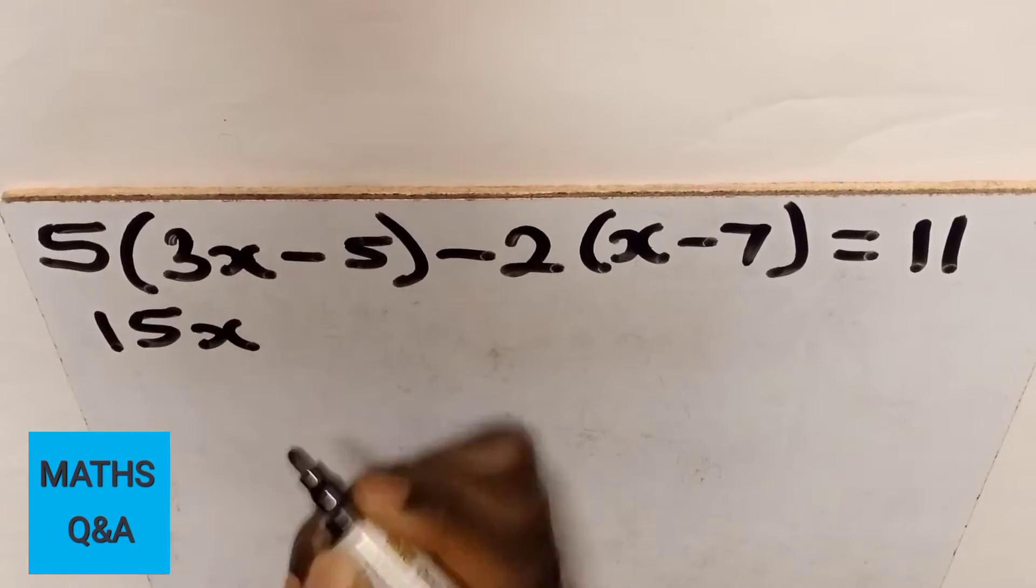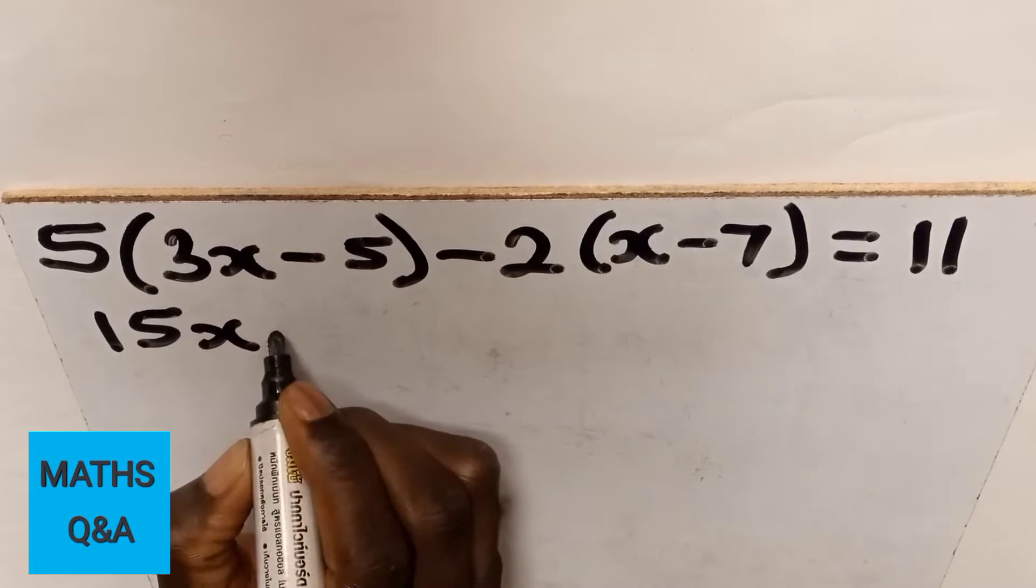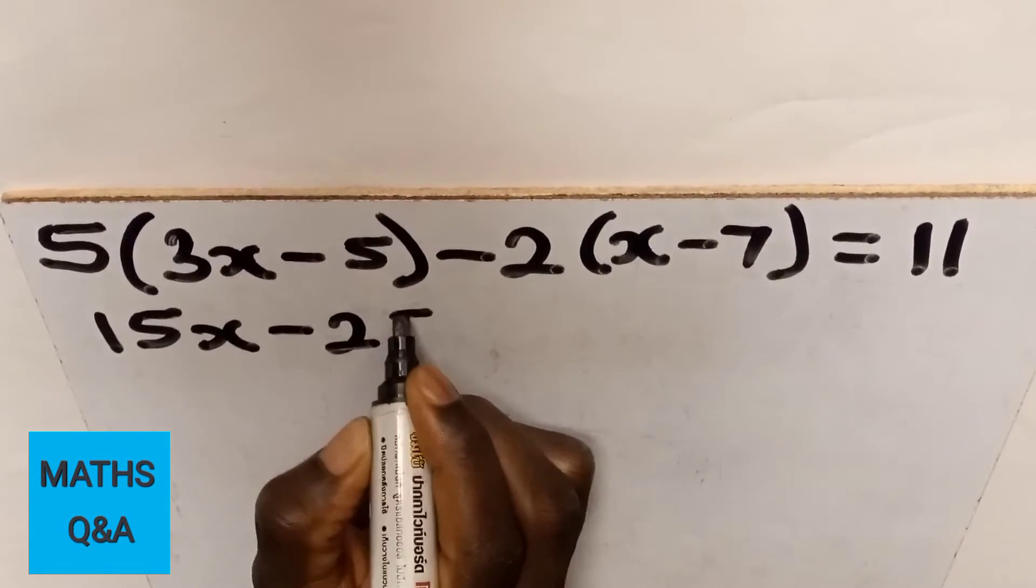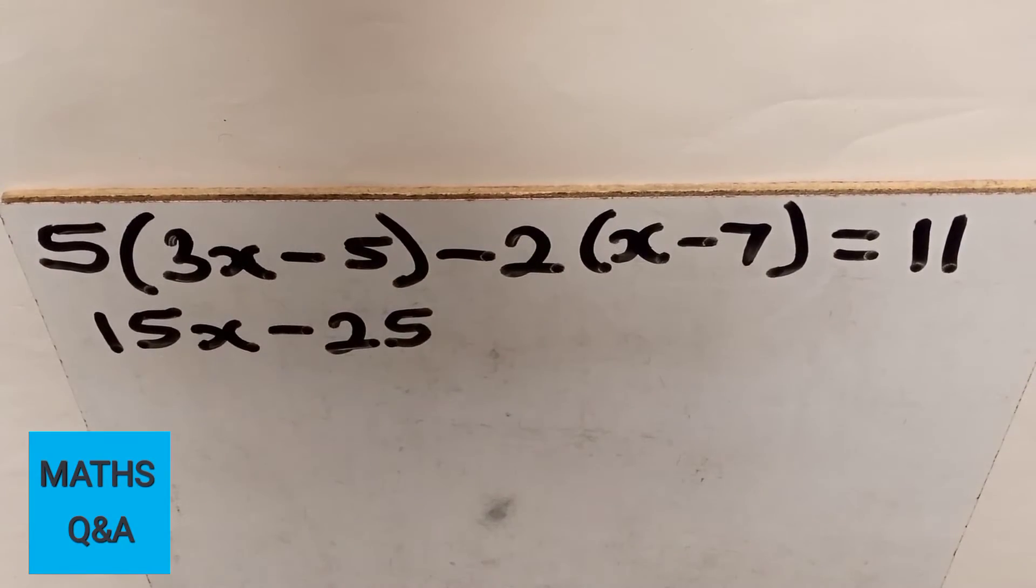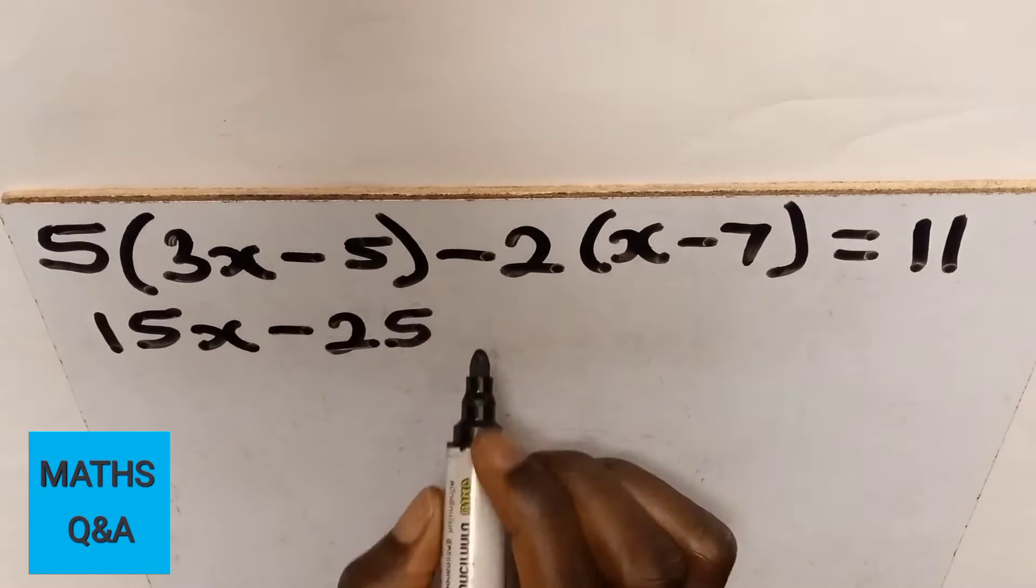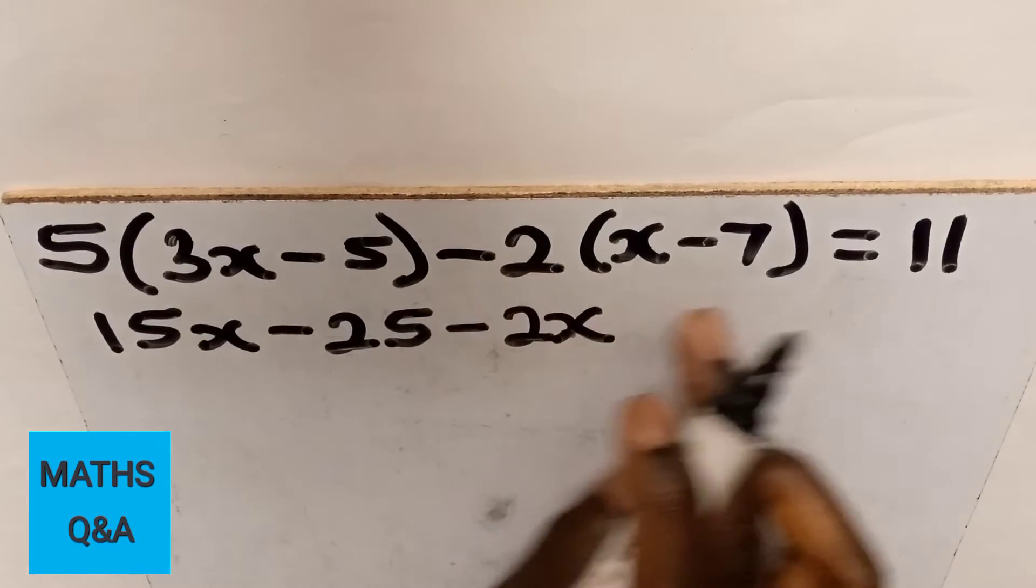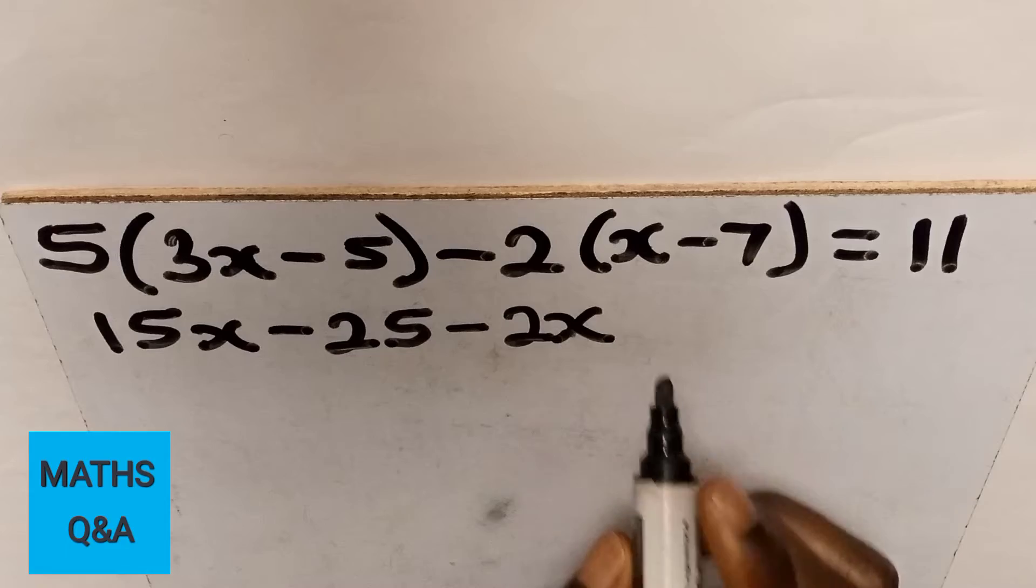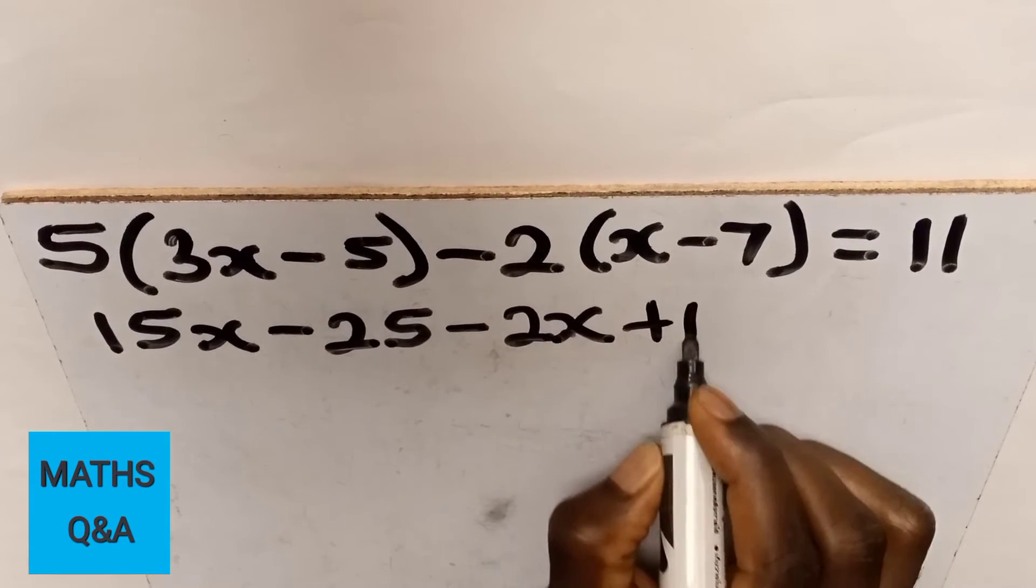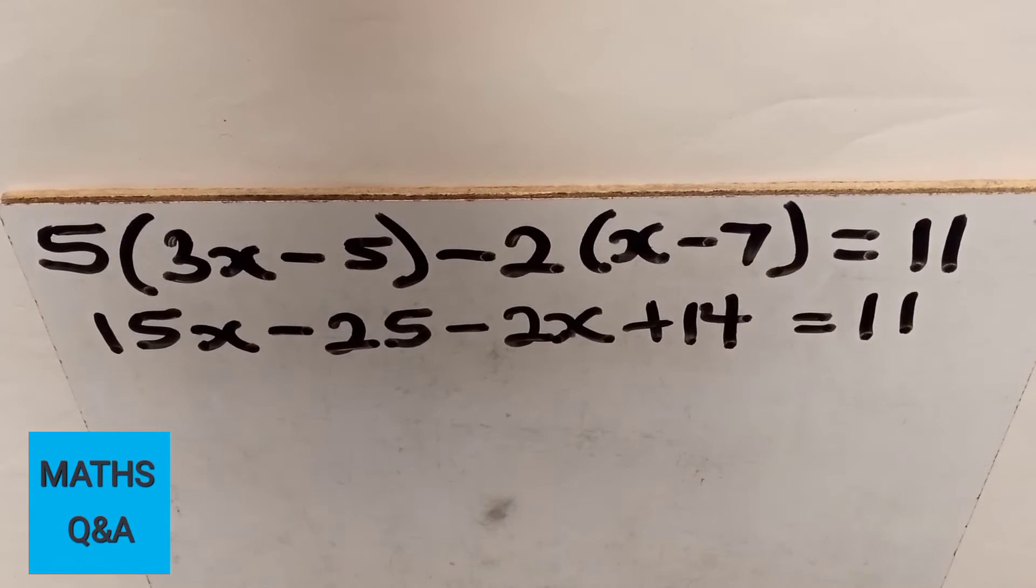15x. 5 multiply negative 5 gives negative 25. Minus 2 multiplying x gives negative 2x. Negative 2 multiply negative 7 gives positive 14 equal to 11.